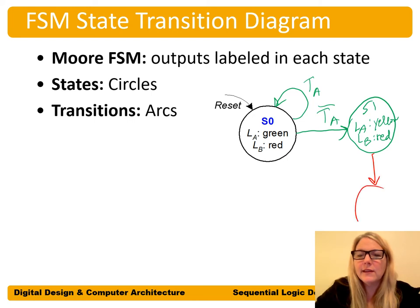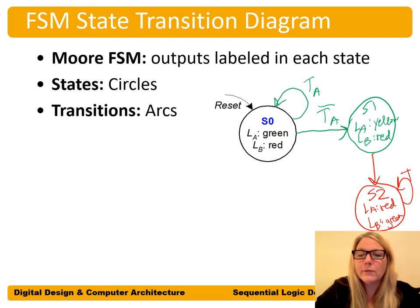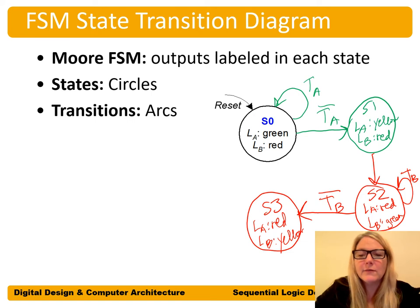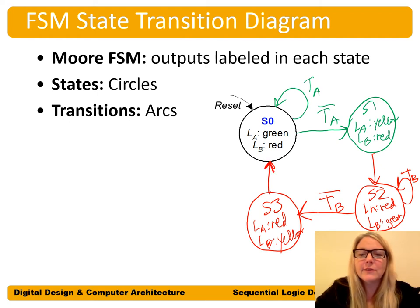On the next clock edge, we go to state S2 where LA is red and LB is green, so traffic can flow on Bravado Boulevard. As long as there's traffic on Bravado Boulevard, it stays in S2. When TB goes low, we move to state S3, where LA stays red and LB goes yellow — getting ready to stop traffic on Bravado Boulevard. Then on the next clock edge, it goes back to state S0.